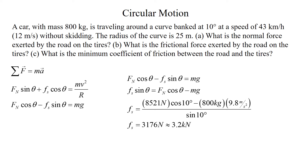For Part B, we want the frictional force F_s. Taking the second equation, F_n · cos θ − F_s · sin θ = mg, and solving for F_s: F_s = (F_n · cos θ − mg) / sin θ. Plugging in 8,521 × cos 10° − 800 × 9.8, divided by sin 10°, gives F_s = 3,176 N, which rounds to 3.2 kN.